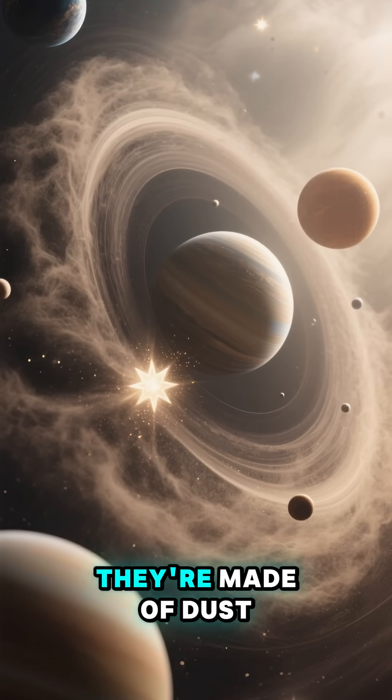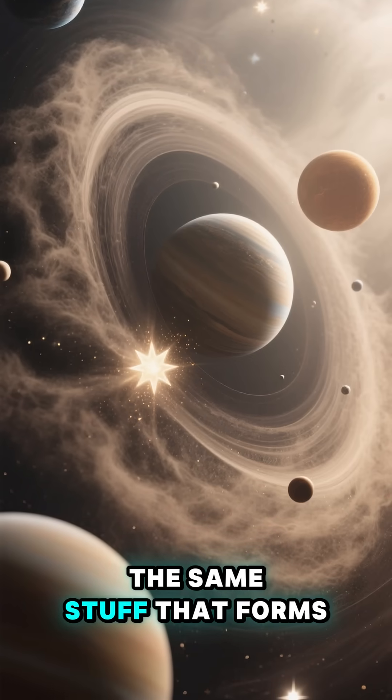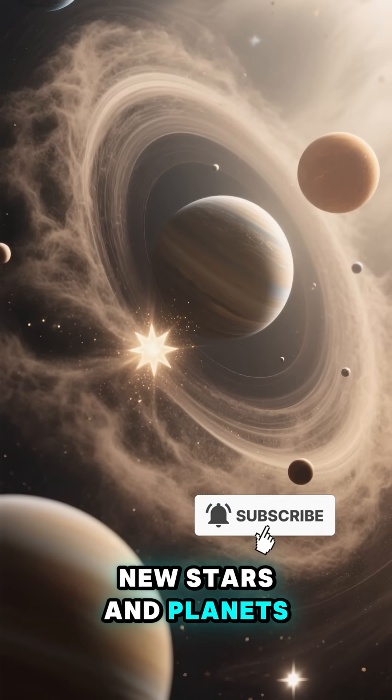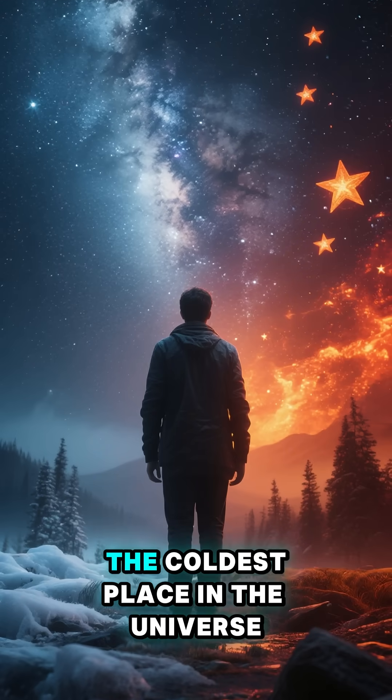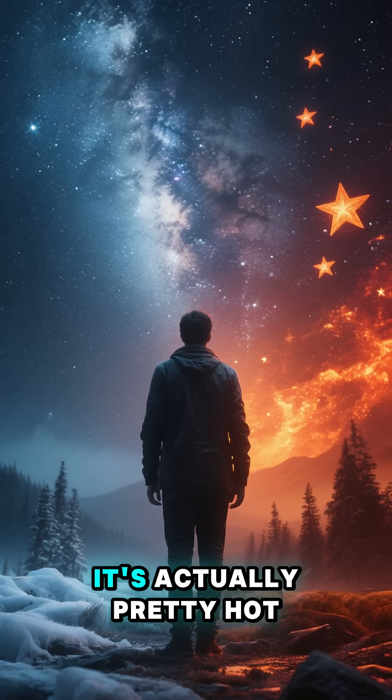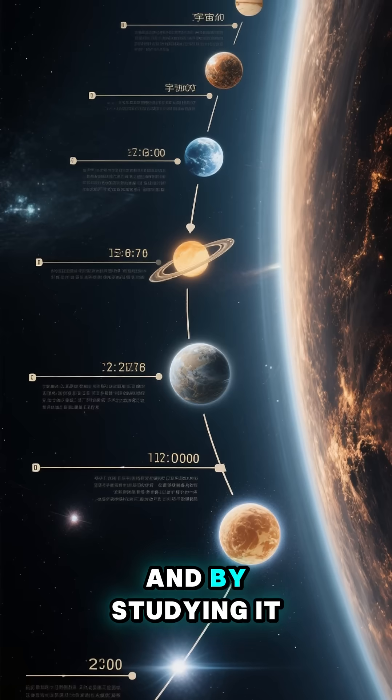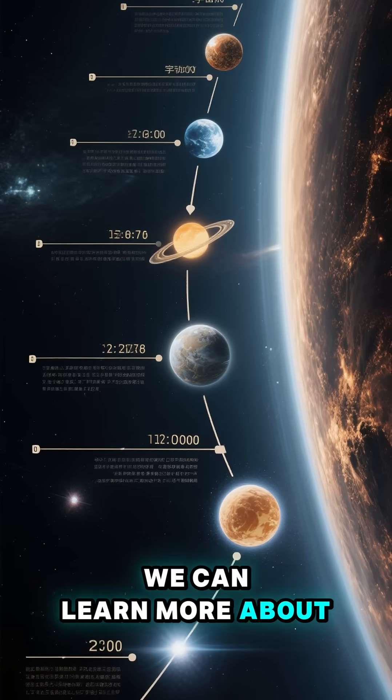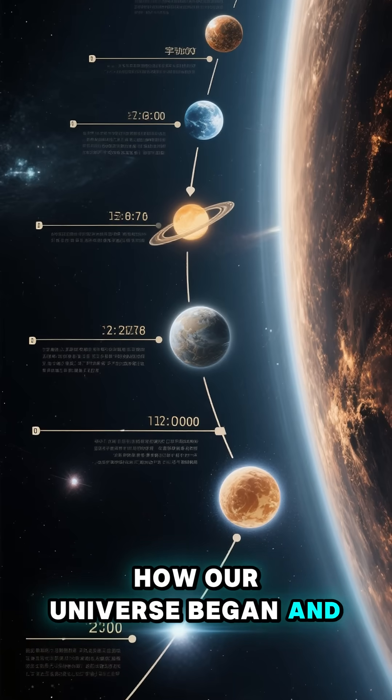And those rings, they're made of dust. The same stuff that forms new stars and planets. So even though this is the coldest place in the universe, it's actually pretty hot. And by studying it, we can learn more about how our universe began and how it will end.